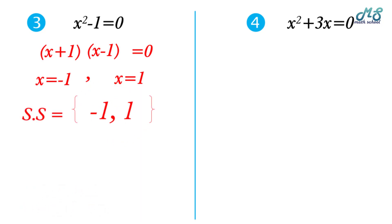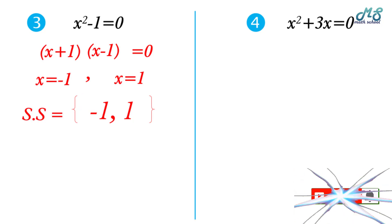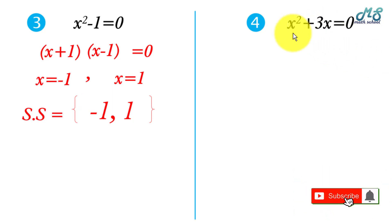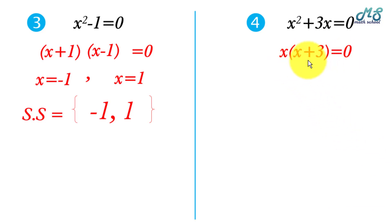Number four: x squared plus 3x equals zero. We have a common factor of x, so it factorizes as x times x plus 3 equals zero. We can deduce that x equals 0 and x equals negative 3.